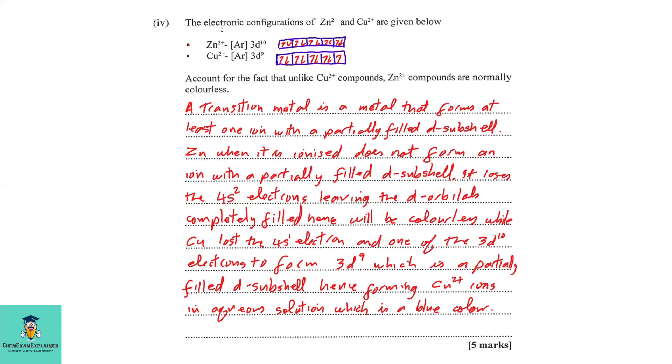Part four: The electronic configurations of zinc 2+ and copper 2+ ions are given below. Account for the fact that unlike copper 2+ compounds, zinc 2+ compounds are normally colorless. So we'll say that a transition metal is a metal that forms at least one ion with a partially filled D subshell. That's a definition. So we must know that definition in order to answer the questions properly.